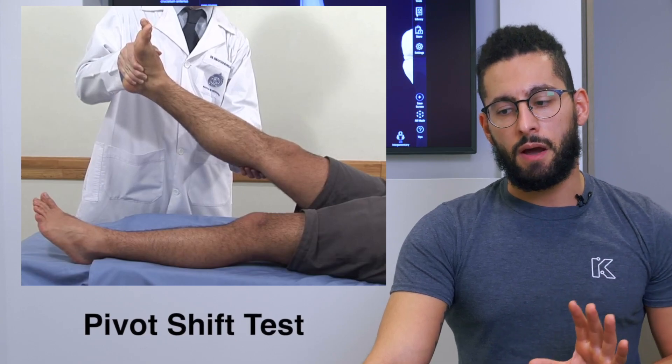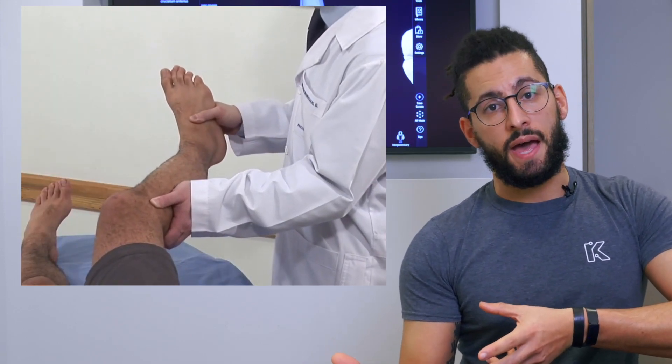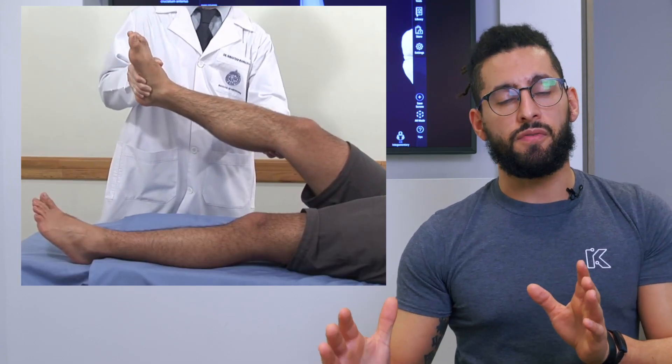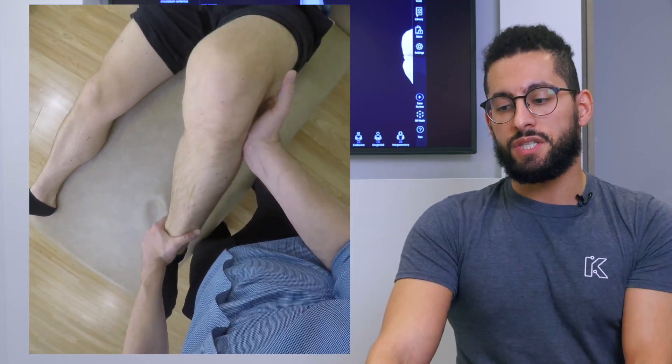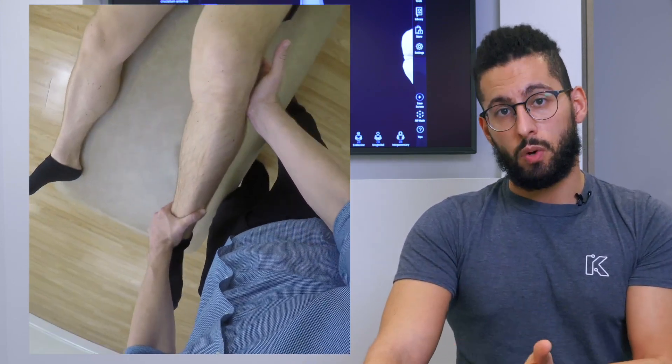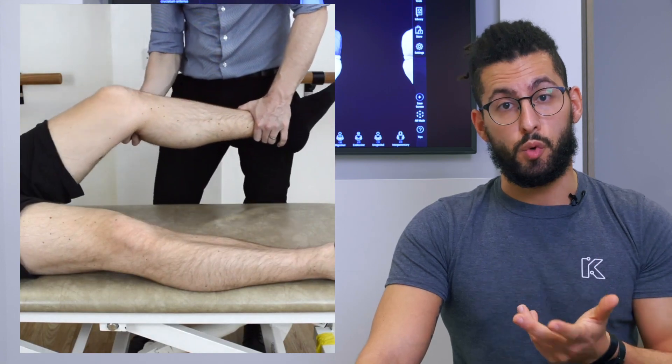One of the best ways to demonstrate what your ACL does is to look at one of the assessment tools we use to diagnose an ACL tear. This one is called the pivot shift test. It's conducted by applying pressure through the foot to recreate forces during weight bearing, while at the same time applying inward rotation to the shin and a little bit of outside-to-inside pressure through the knee. In a healthy knee, there is not much movement of the shin relative to the thigh, and as you bend and straighten the knee it should be a relatively smooth movement.